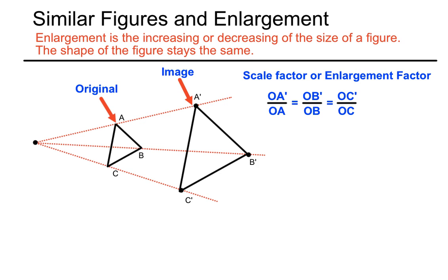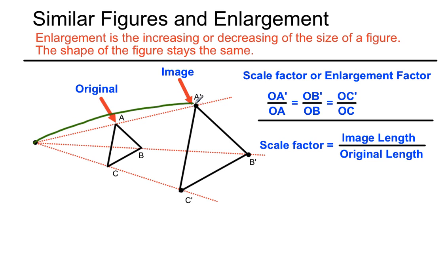Another way of thinking about scale factor is to take the image length and put it over the original length. So the image length would be OA dash over the distance between O and A. That's different ways of thinking about the scale factor or enlargement factor to help us in the future.